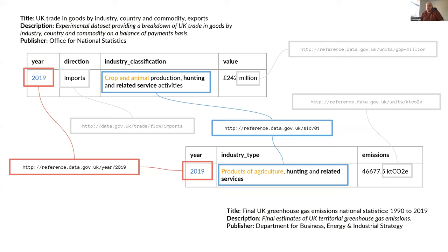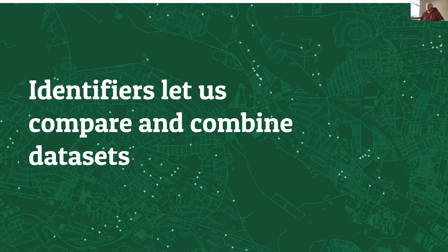CSVW gives a really clear way of creating these identifiers. Through the mapping that Robin showed earlier, you have a way of taking data in a CSV file, mapping it to a set of identifiers, and then for free you get a linked data representation of the data. The challenge is: where do you get good identifiers from? Common classifications and code lists are often published without linked data identifiers. But if we can get to a world where we're commonly publishing things with linked data identifiers and using CSVW as a mechanism to represent that data, then for free you get a lot of this data linkage coming together.